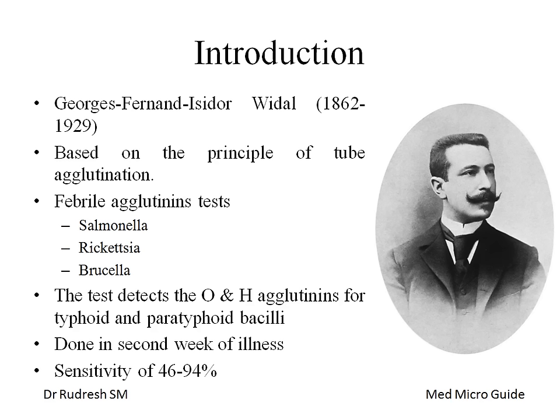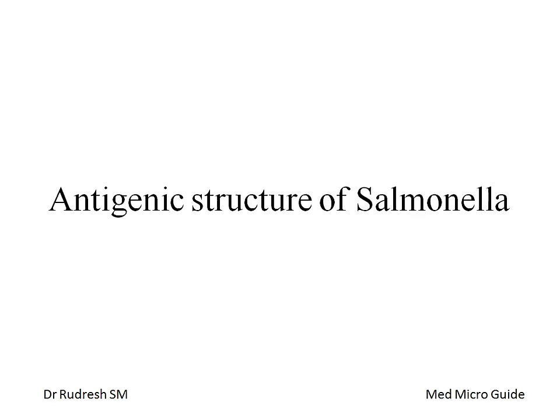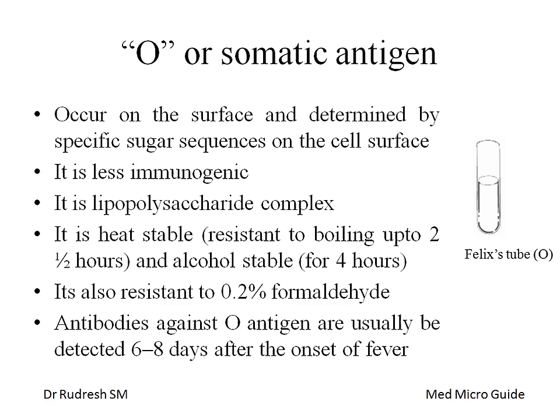In the Widal test, we detect antibodies against the O and H antigens of the typhoid and paratyphoid bacilli. The test is recommended to be done in the second week of illness when antibody titers are high, and the sensitivity of the test varies from 46 to 94 percent.